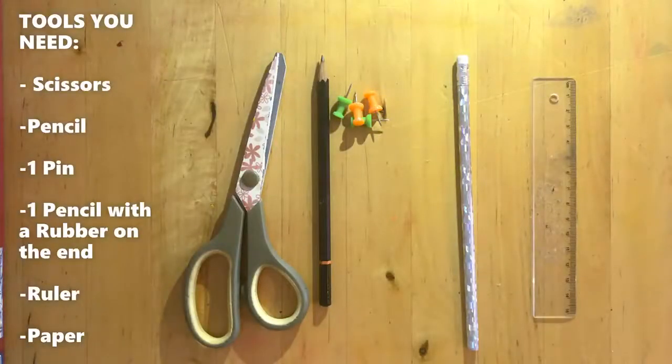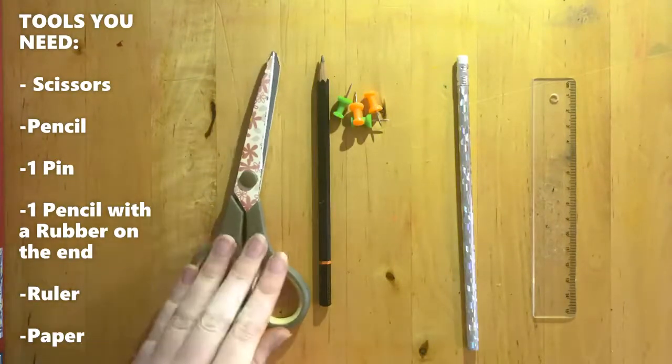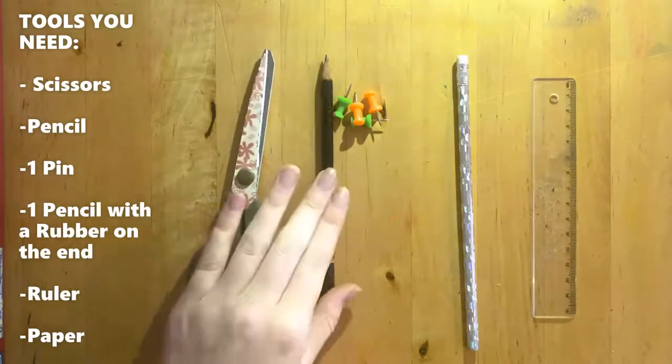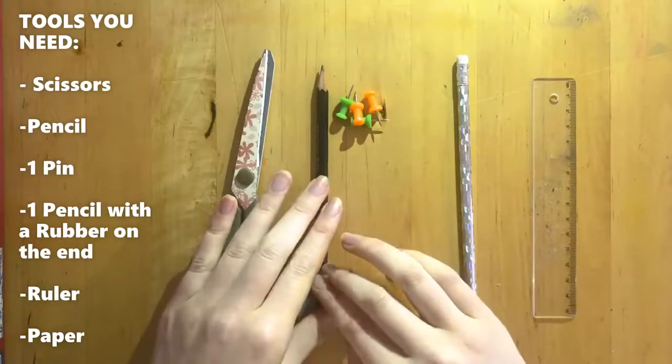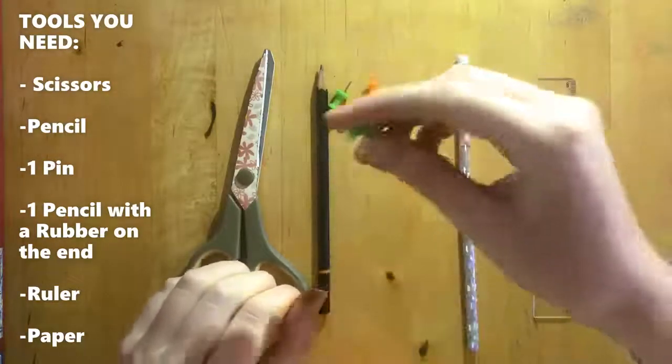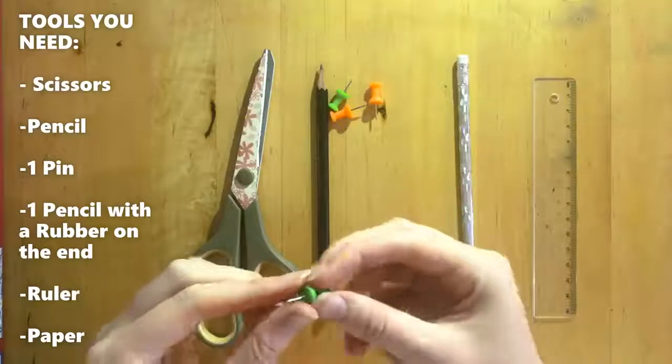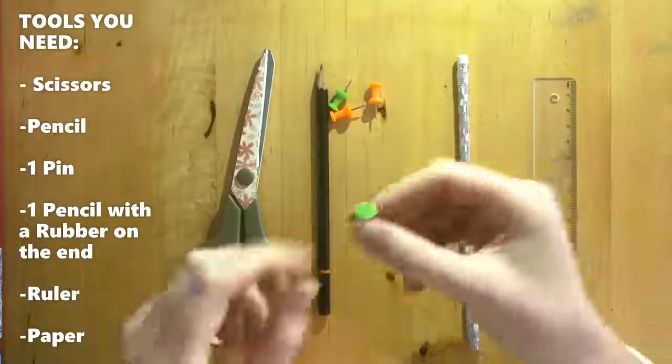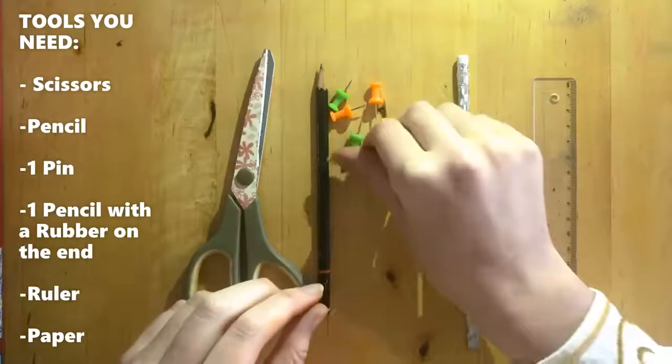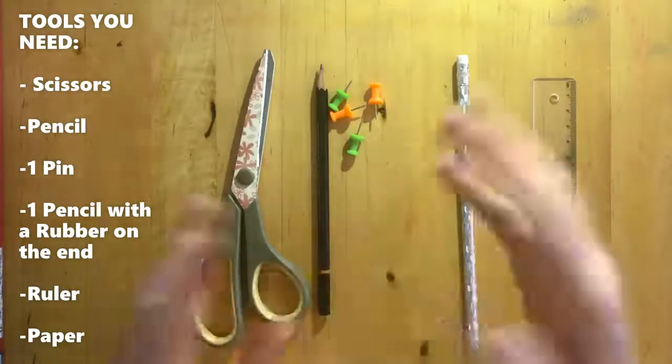Okay, now to show you the tools you're going to need. The tools you're going to need for making your pinwheel are going to be a pair of scissors, a pencil to draw your lines on, one pin that can be any kind of pin, a push pin, or a pin you find in your sewing kit.